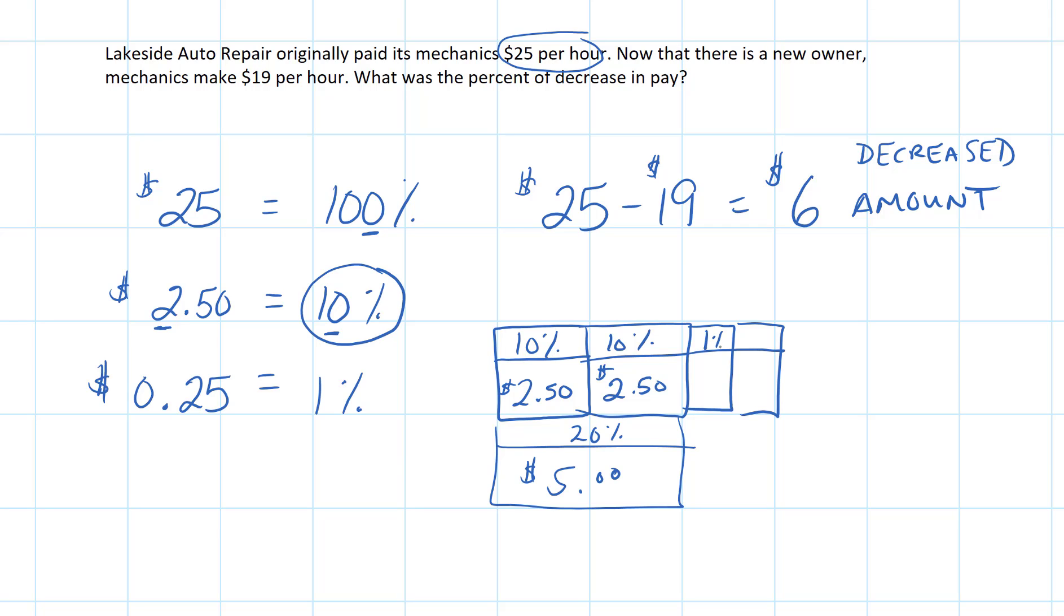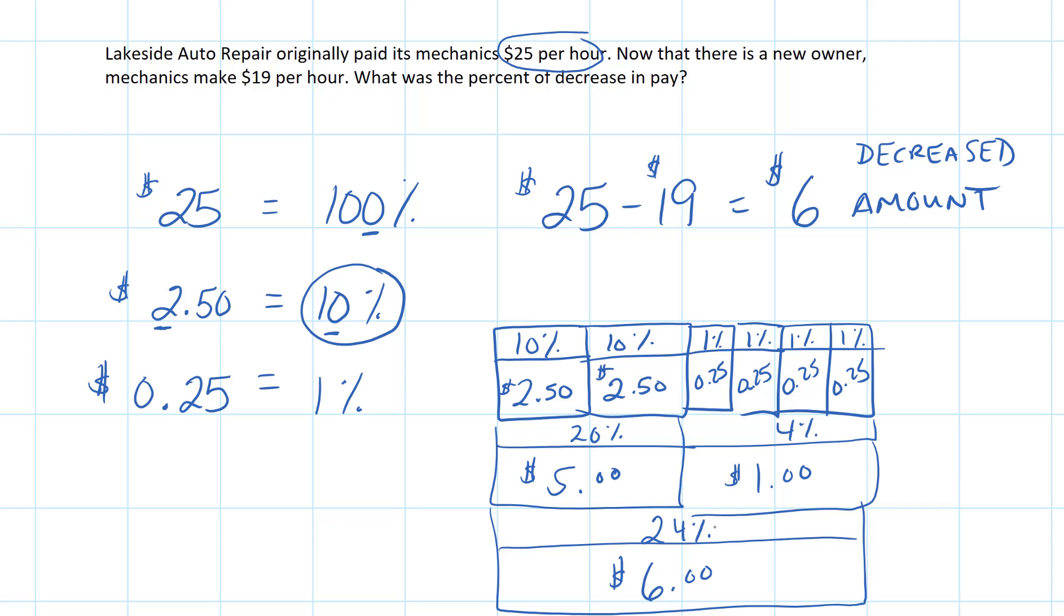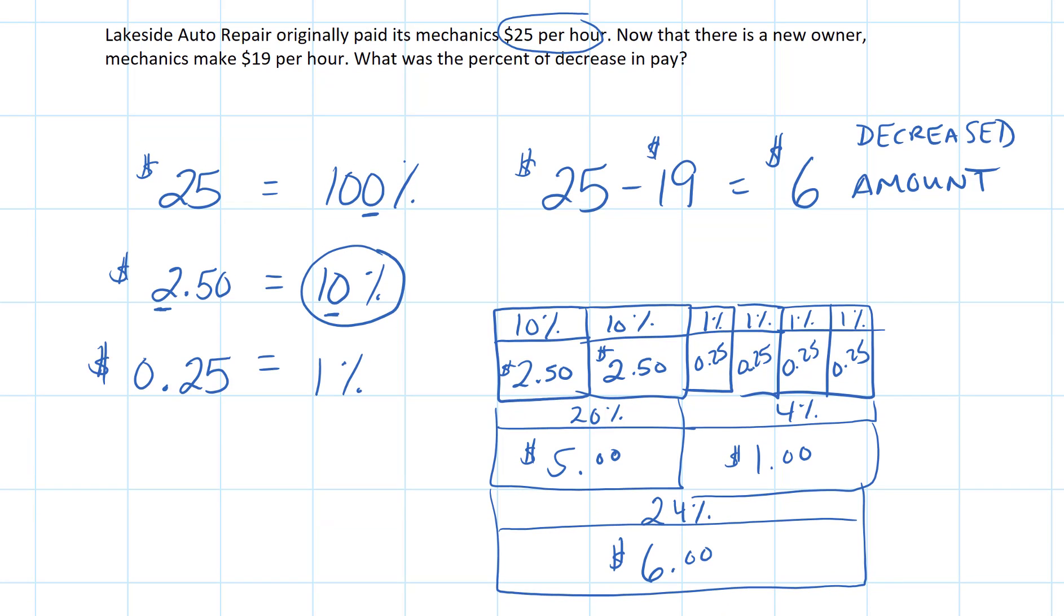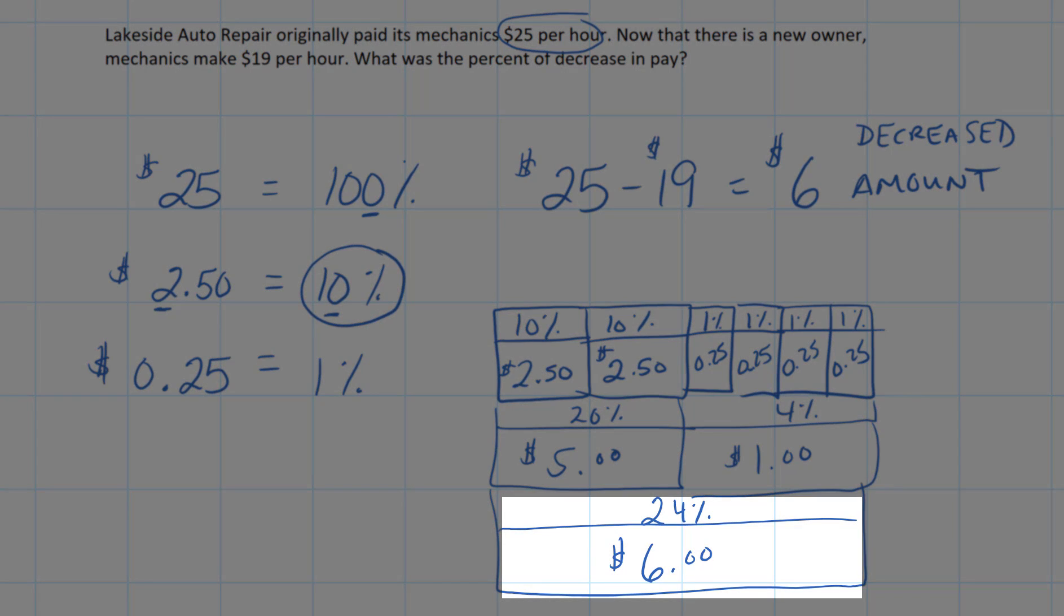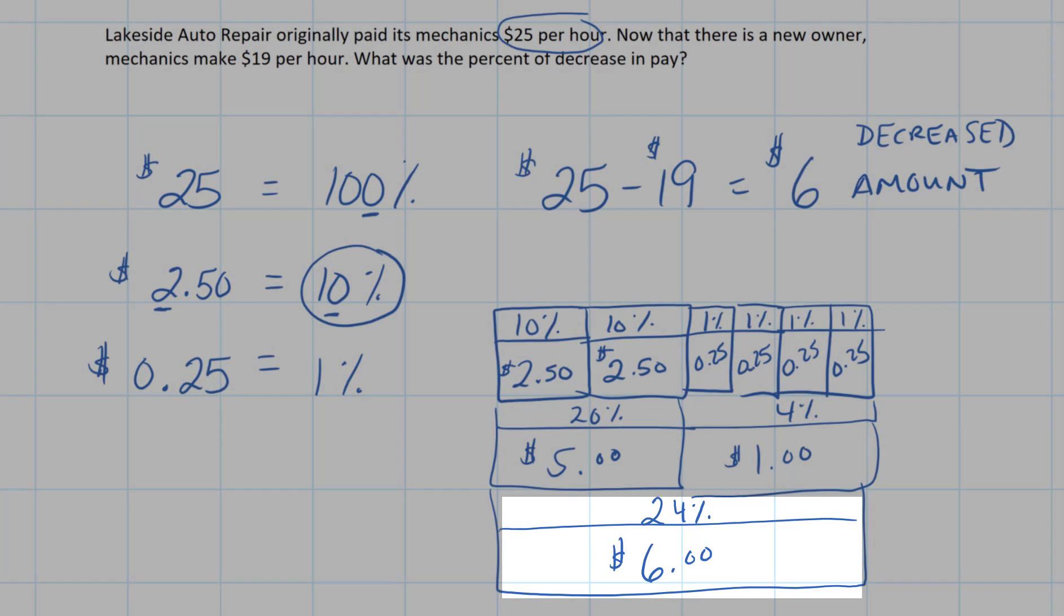And I draw them a little bit bigger so that we can see them. But each 1% is worth 25 cents. Well, I'm a dollar away so I need four of these. I need four quarters. And so I need four 1% boxes. And that gives me 4% there which is another dollar. And so now putting this together, I realize I've got my $6.00 that was decreased from these workers. And my percentage that I have is 24%. So the decreased amount of $6.00, they lost 24% of what they were paid per hour.